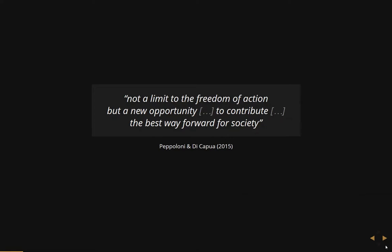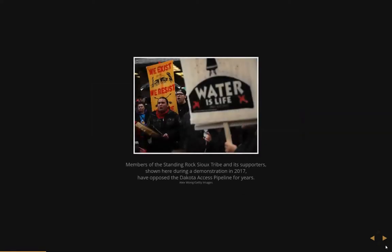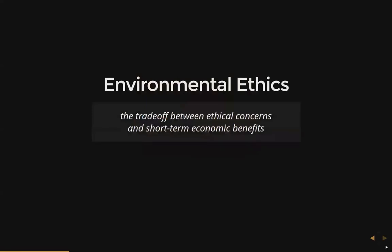How do we define it? I thought perhaps to put it into something more recent. If you scroll through the news articles on the web right now, you will see references to the Dakota Access Pipeline, which heralds back to those ethical dilemmas from 2017 and all of those environmental issues. Looking at this, we think of environmental ethics really as the trade-off between our ethical concerns and short-term economic benefits. Both terms relate to what we value, but more importantly, how our values influence our actions.